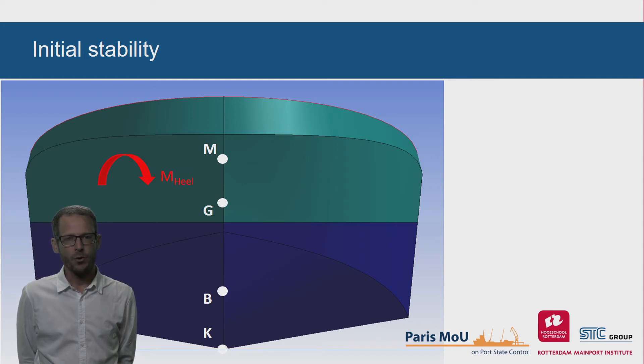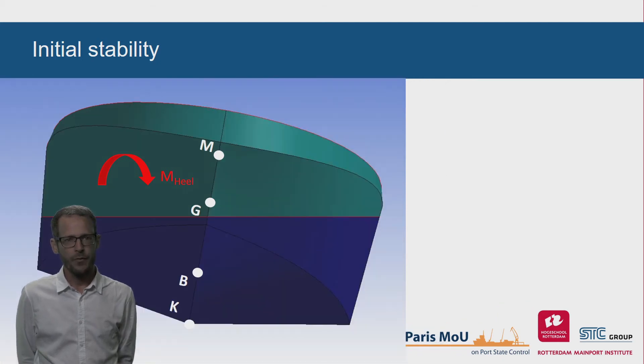Now let us look why GM is important for the initial stability. Suppose we have an external moment acting on the ship. As a result from the healing moment, the ship starts to heel, and this heel has an effect on the underwater volume. The position of G, the center of gravity, remains in place.